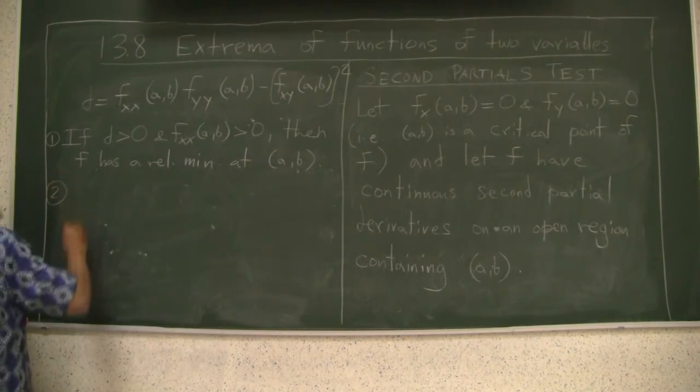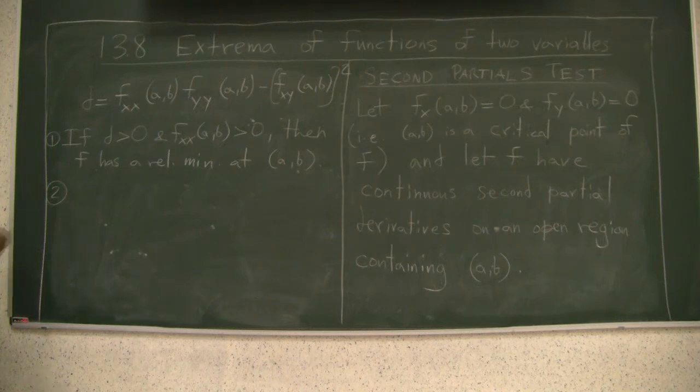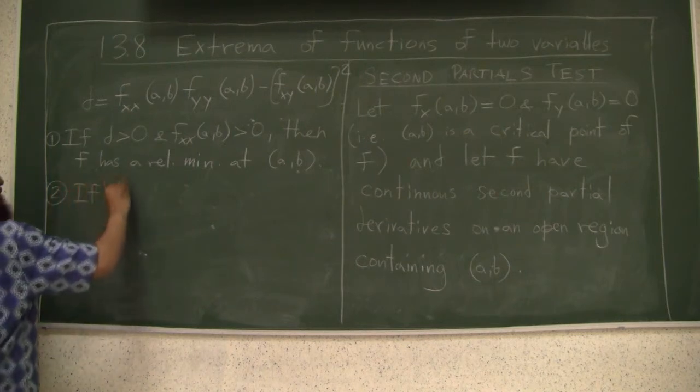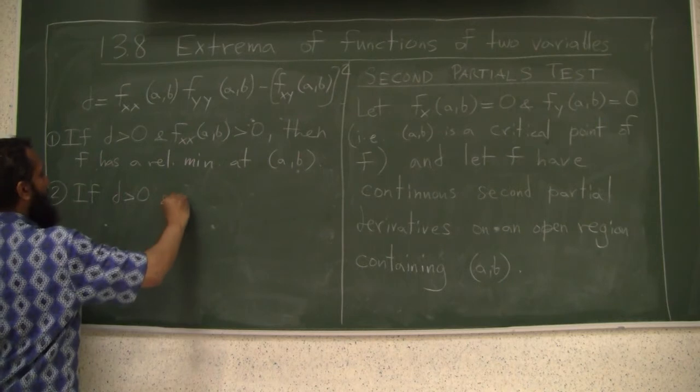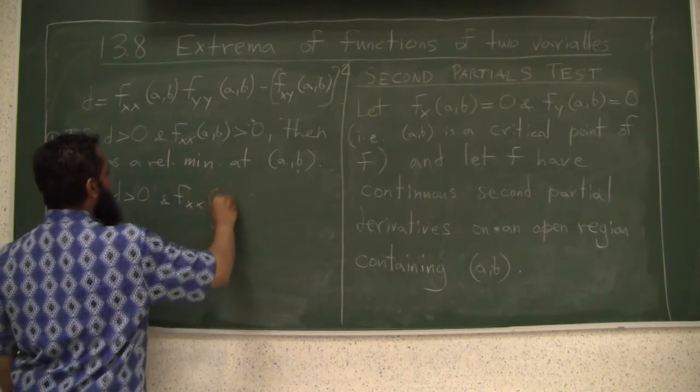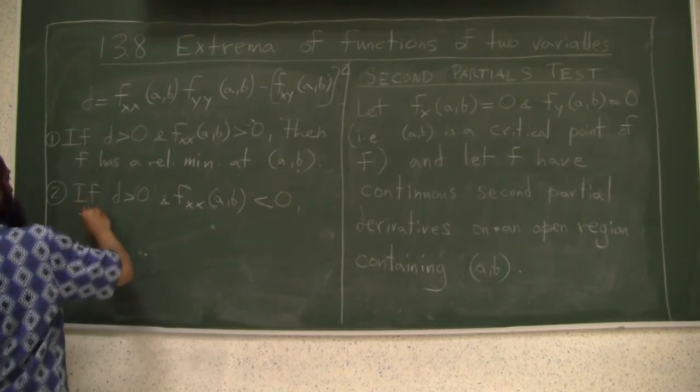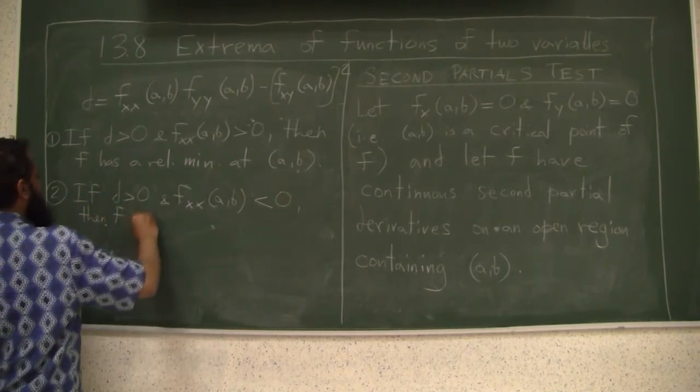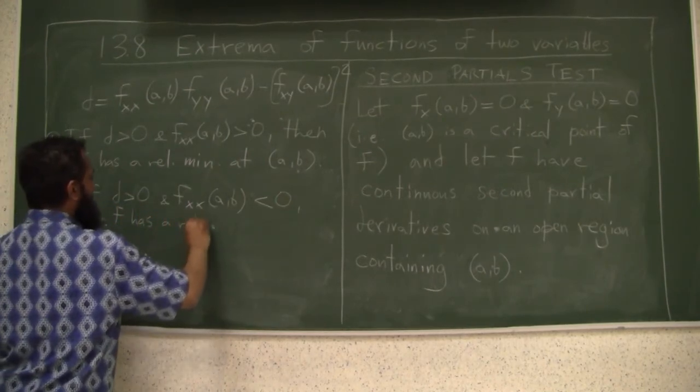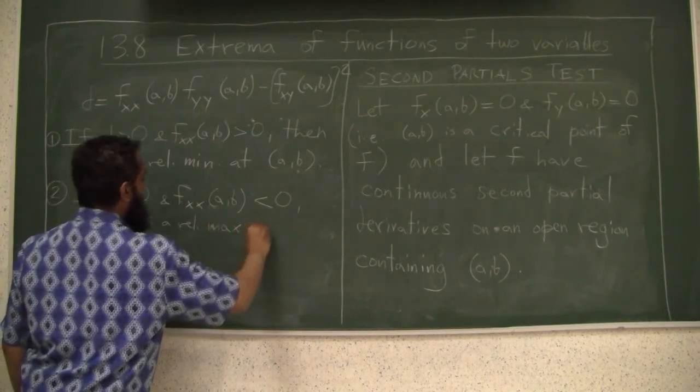Number two, if d is bigger than 0, and f_xx at (a,b) is less than 0, then f has a relative max at (a,b).